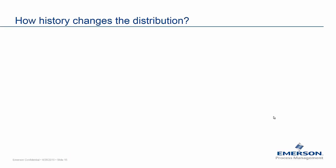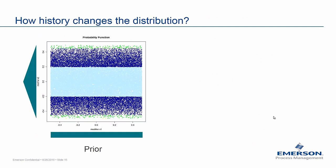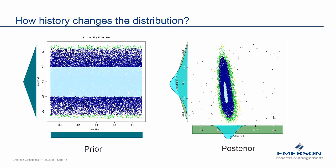To illustrate how history matching changes the distribution: consider a 2D example where modifier X1 has a user-specified prior uniform distribution and modifier X2 has a triangular prior distribution, with each sample being equiprobable. After history matching, the distribution changes — the prior distribution has been updated. This updated distribution is what is used when calculating prediction confidence intervals. History matching replaces the engineer's prior beliefs with a distribution that reflects the weighting derived from the history match — and that is precisely what the history match is all about, calculating the posterior distribution for probabilistic forecasting.